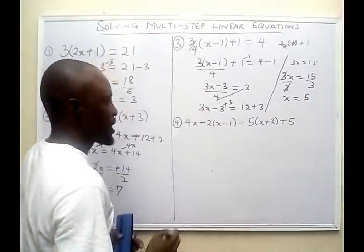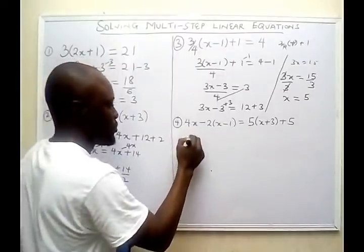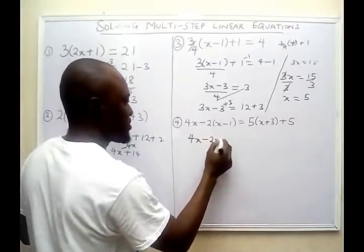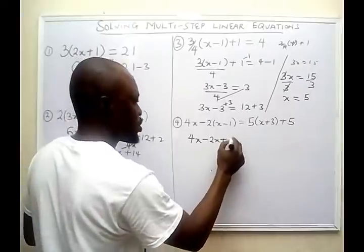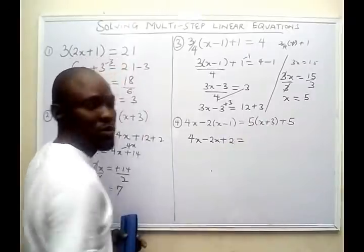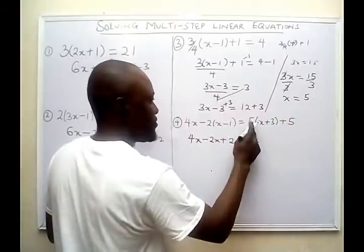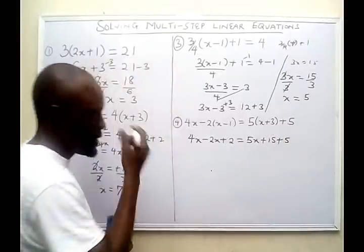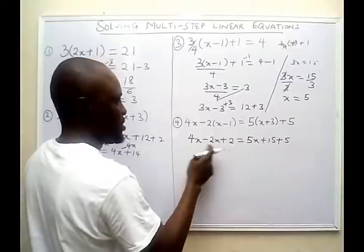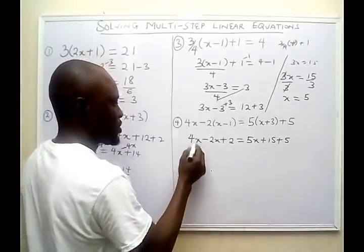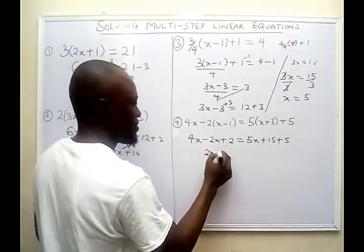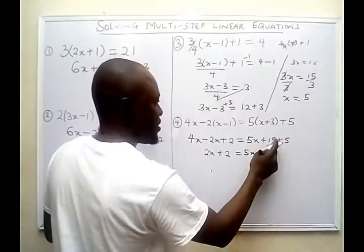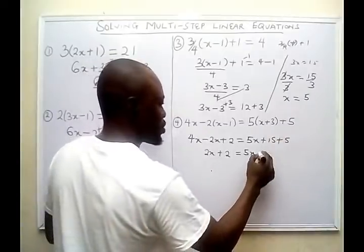This is the next problem. The first thing I need to do is open up the bracket. I bring down 4x, then expand: minus 2 times x gives minus 2x, and minus 2 times minus 1 gives plus 2, equals 5 times x gives 5x, and 5 times plus 3 gives plus 15, then there is a plus 5. Now let me reduce the equation: 4x minus 2x gives me 2x, plus 2 equals 5x, and 15 plus 5 gives 20.